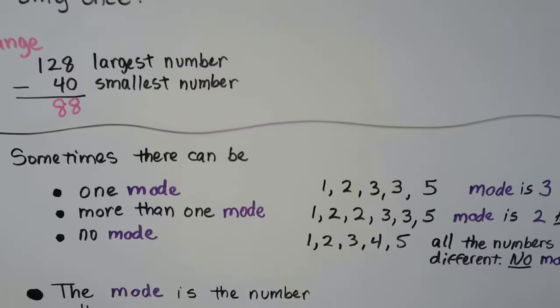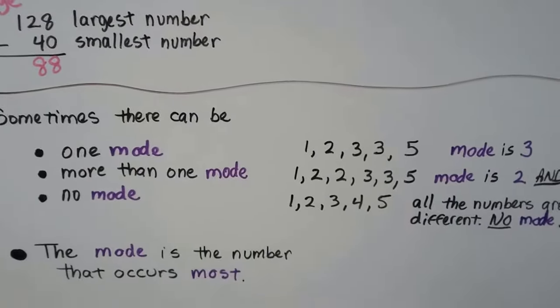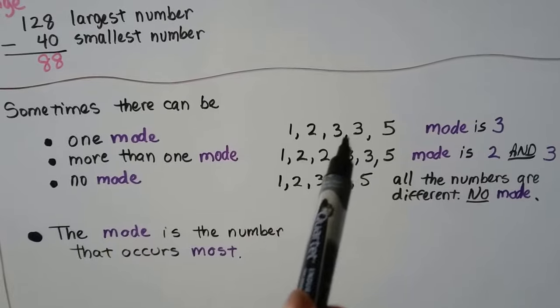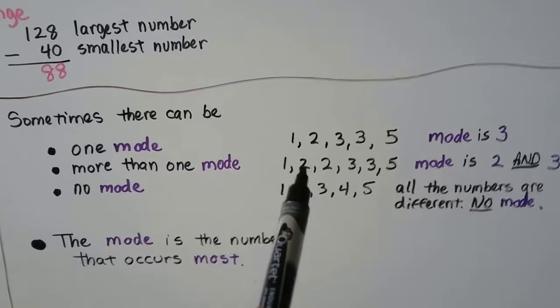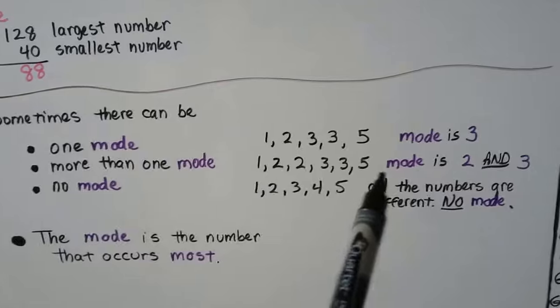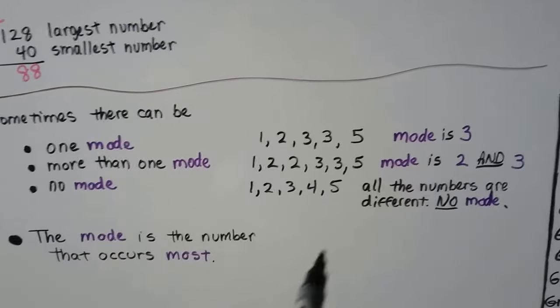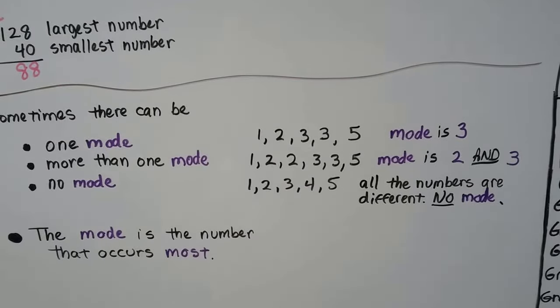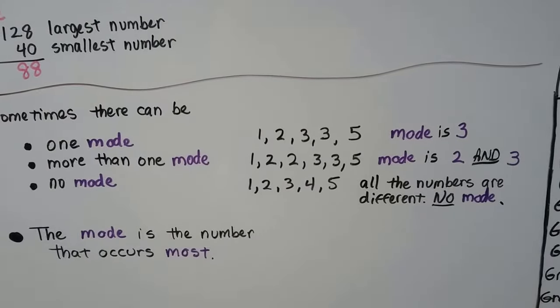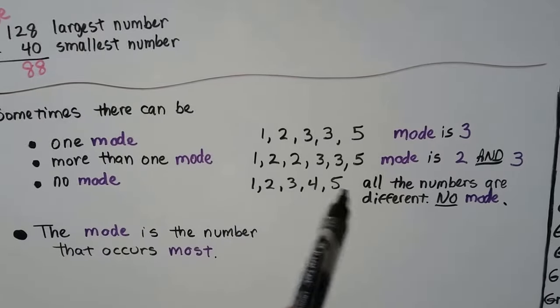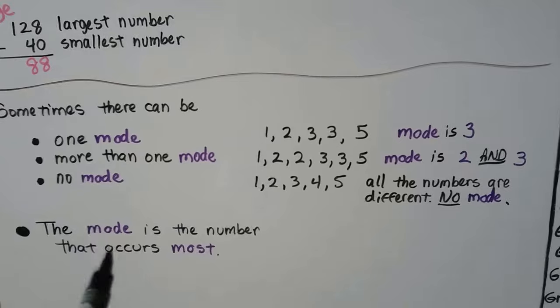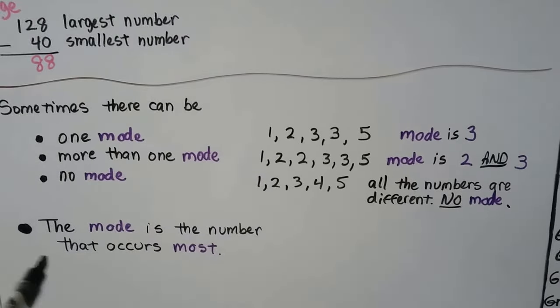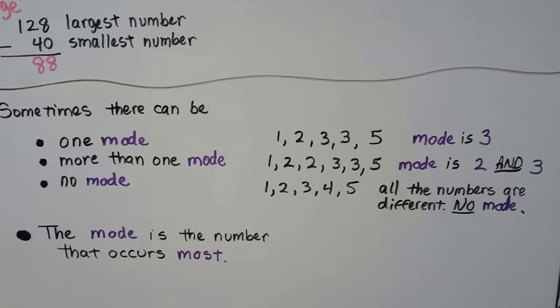So sometimes there can be one mode, more than one mode, or no mode. In this list, the mode is three because it's the one that occurs the most. There's two of them. In this one, we have a two and a two and a three and a three. So the mode is two and three. So we have more than one mode. There's an equal number of twos and threes. So we have more than one mode. We have a two and a three. In this one, all the numbers are different. One, two, three, four, five. So there's no mode. So remember that the mode is the number that occurs most. And if there aren't any numbers that occur most, they all appear once, then there is no mode.